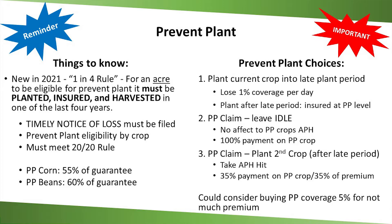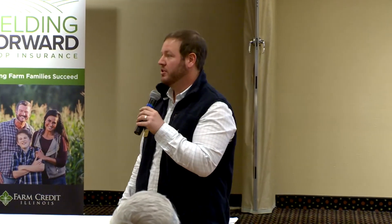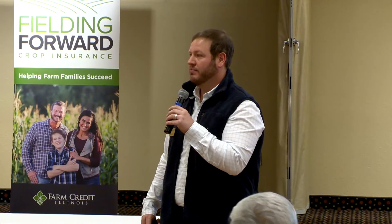Other things to consider: you have the option to buy up your prevent plant coverage. Currently the standard rate is 55% of your guarantee on corn, 60% on soybeans. An extra 5% gets you to 60% and 65% respectively. Relatively inexpensive for this area. After electing prevent plant, your options are: most common is leave the ground idle — you get 100% payment and it does not affect your APH. Your second option is to plant a second crop, which will affect your corn APH and you can only get 35% of your prevent plant payment.